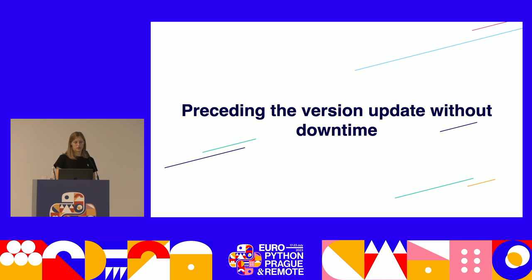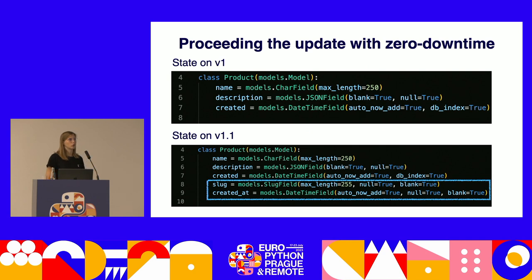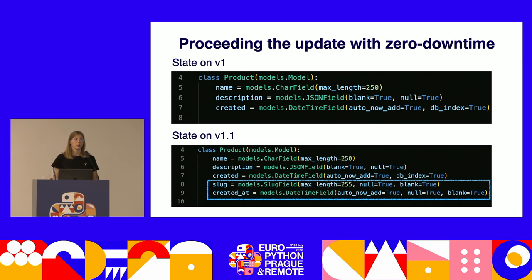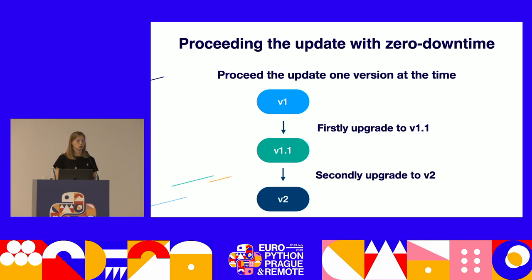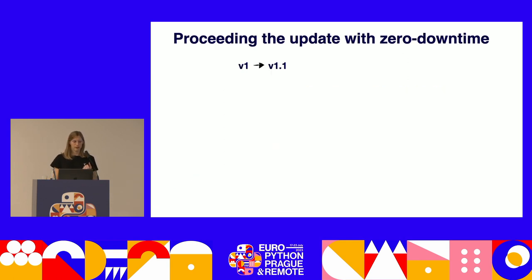Now we know the problematic operations and how to write migrations that won't crash the system. The last missing piece is how to proceed with the upgrade. We need to release the changes applied on version V1 as a minor or patch release — I'll use minor release V1.1 for simplification. So on version V1.1 we'll have two new nullable fields: slug and created_at. Then we need to upgrade to this minor version first, and then to the target version. So we switch from V1 to V1.1 and then from V1.1 to V2. Upgrading through this intermediate version is crucial.